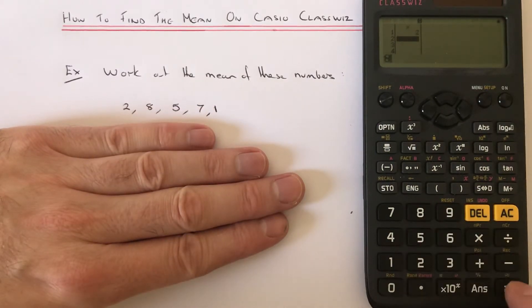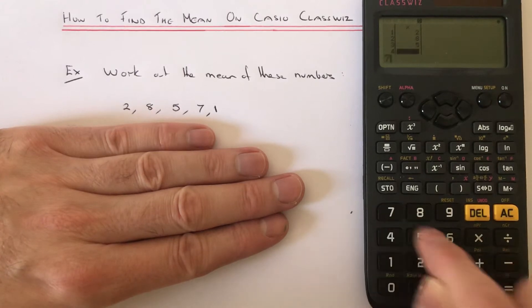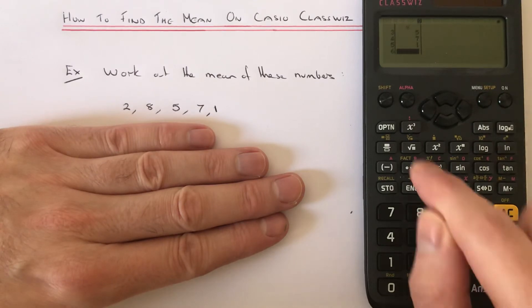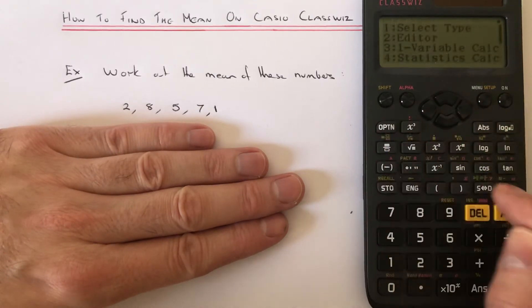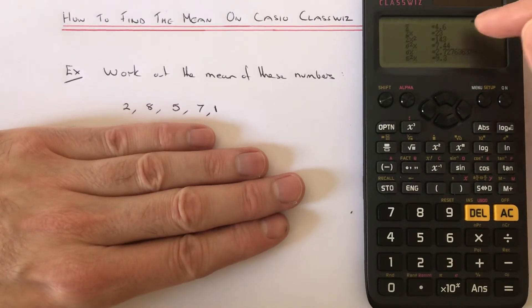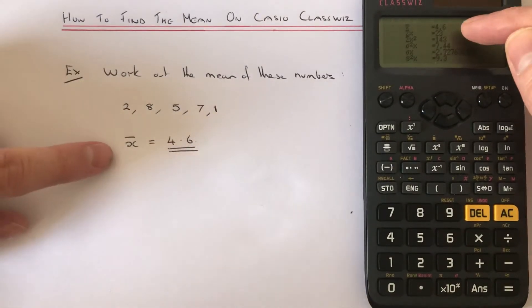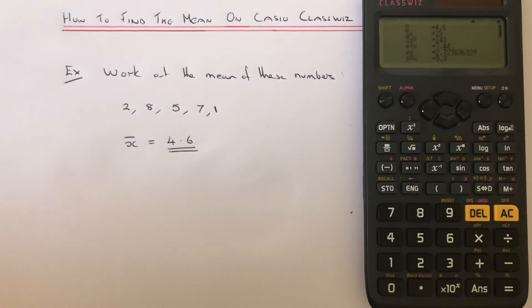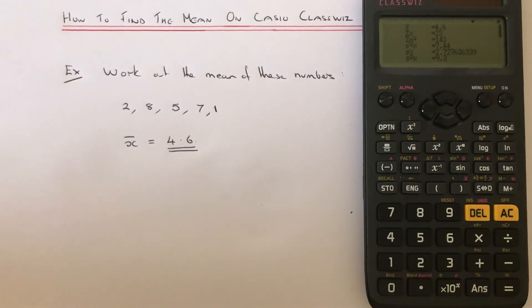And then to get the mean, we just do option number three and mean average is right at the top, which is X bar, and that is four point six.